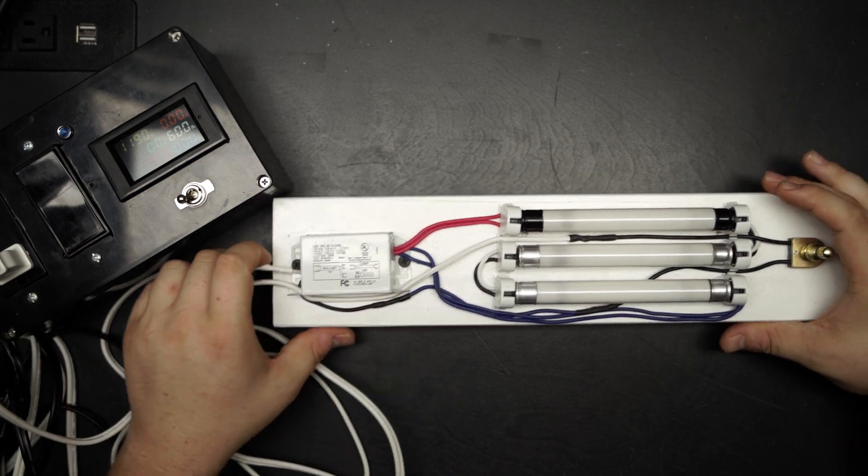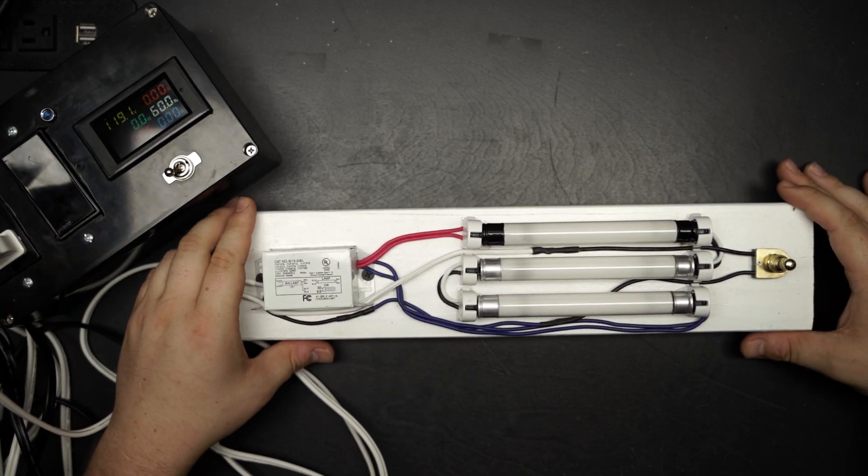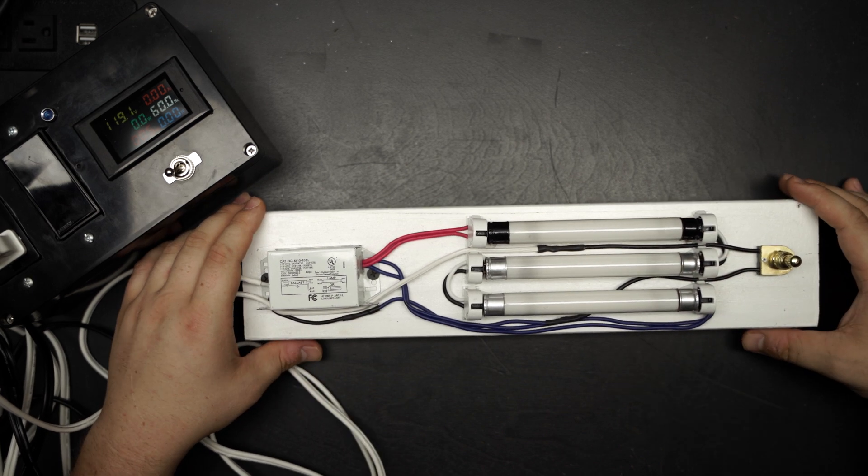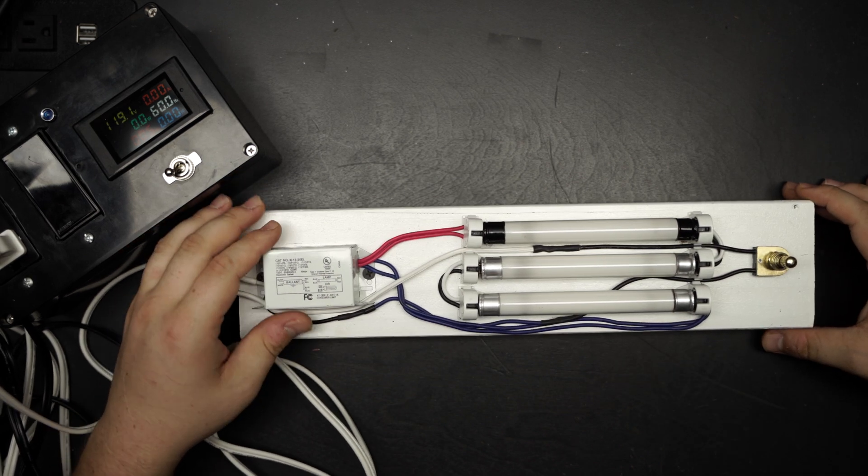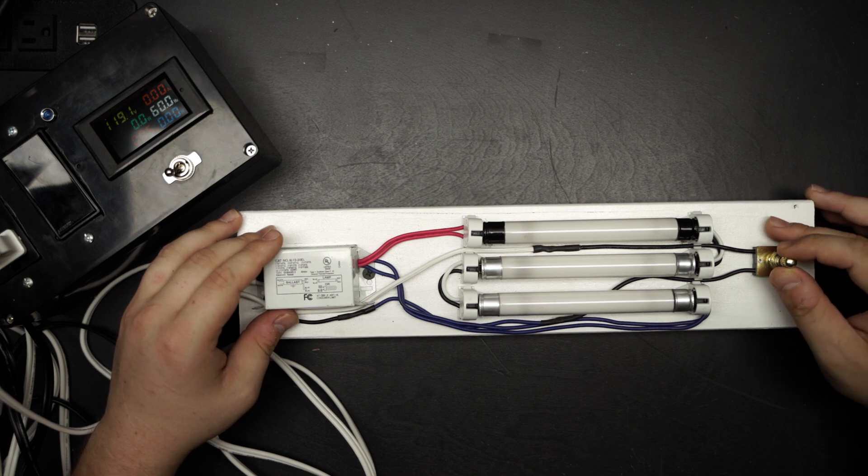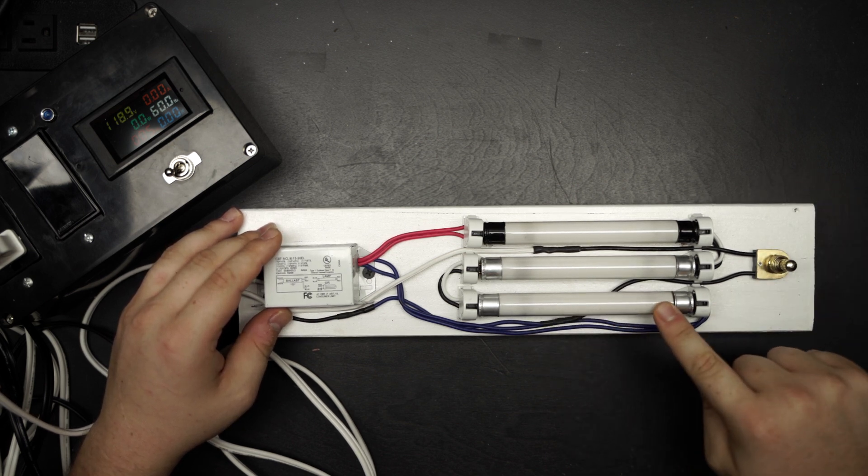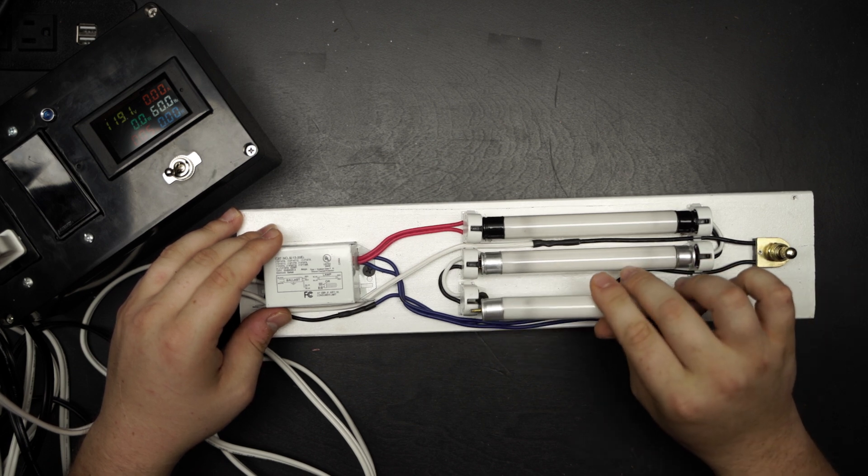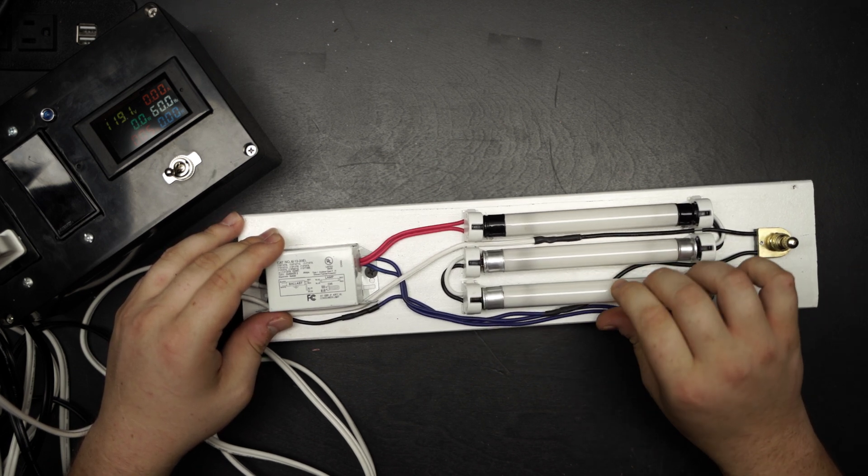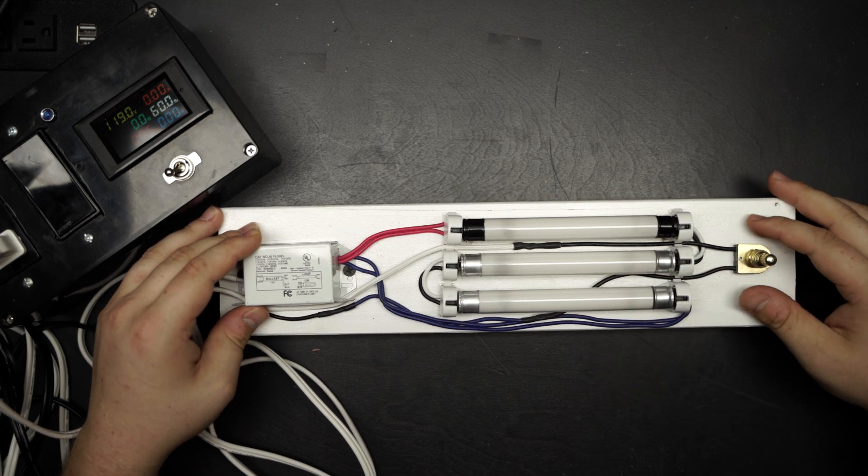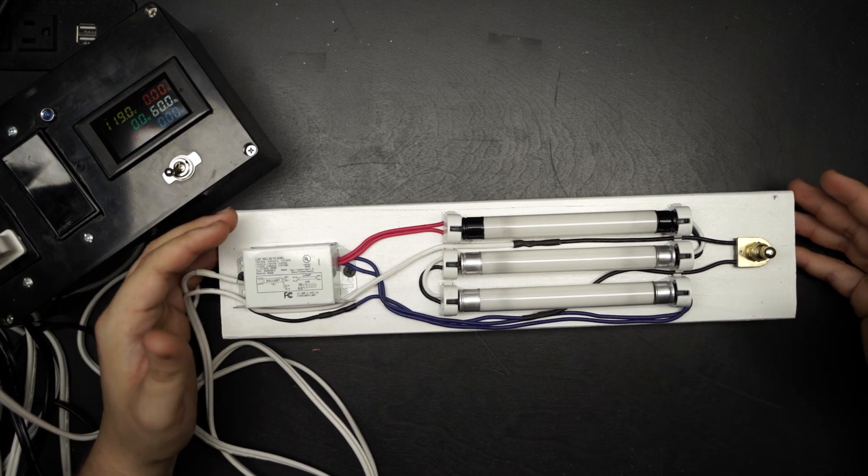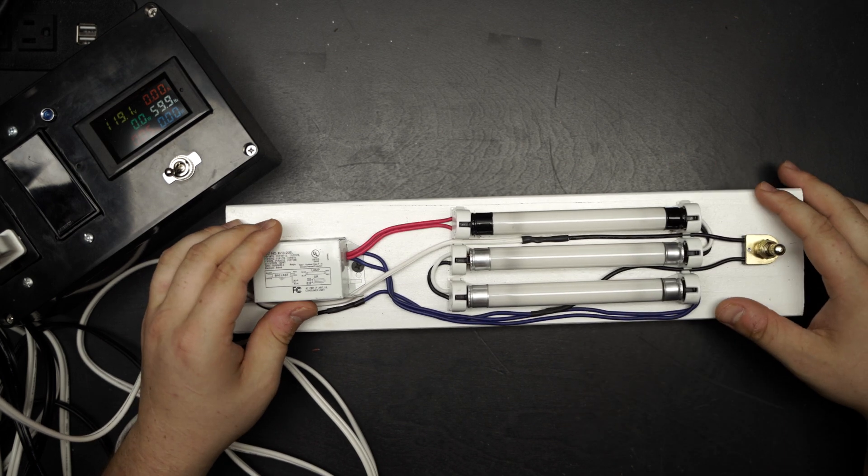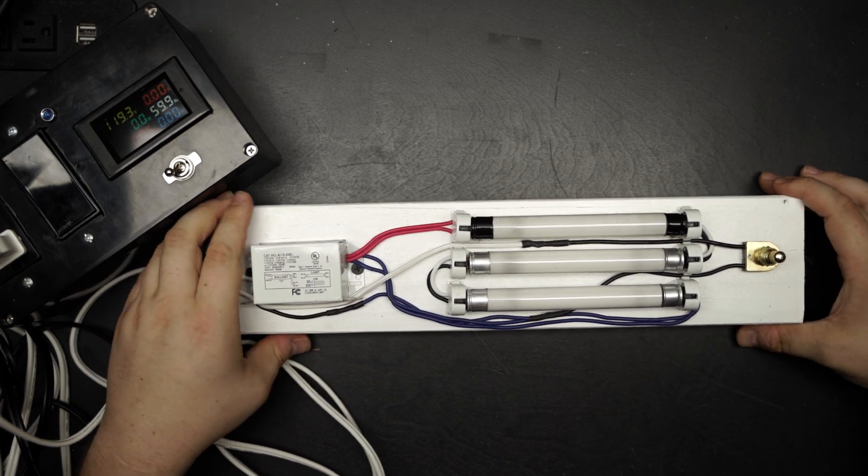I'm dubbing this one the MS312. The MS in MS104 stands for mini strip. And then the 1 stands for one bulb. And then the 4 stands for a 4-watt bulb. They also make an MS106 and an MS108 with a 6 and 8-watt bulb. So I'm dubbing this one the MS312. 3 bulbs, 12 watts, 4 times 3.